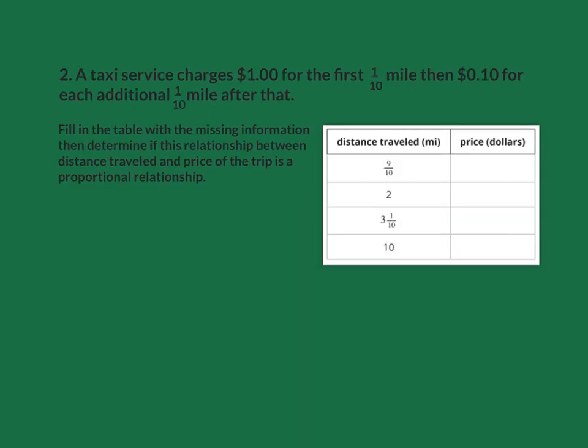Next, a taxi service charges $1 for the first one-tenth of a mile, and then $0.10 for each additional one-tenth of a mile after that. The first thing we need to do is fill in the rest of the table, and then decide if it's proportional.